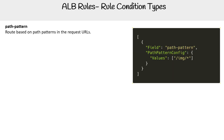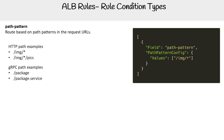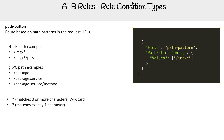Let us take a look at our next one, which is path pattern route — based on path patterns and the request URL. Examples could be this route or that route. You can even do gRPC routes as well. You can match based on wildcard or question mark as per usual.